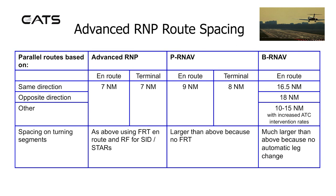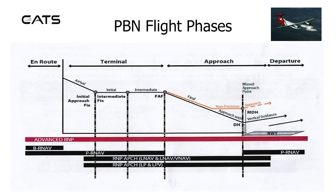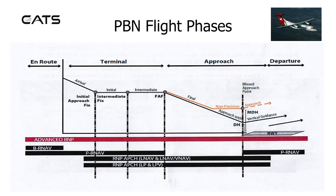PBN flight phases under consideration are: en route, terminal, approach, and departure. Advanced RMP covers all of these flight phases. Basic RNAV comprises just the en route. Precision RNAV is en route and terminal, and also an element of the approach including the missed approach and departure. An RMP approach in its various forms includes part of the arrival and up to and including the missed approach.